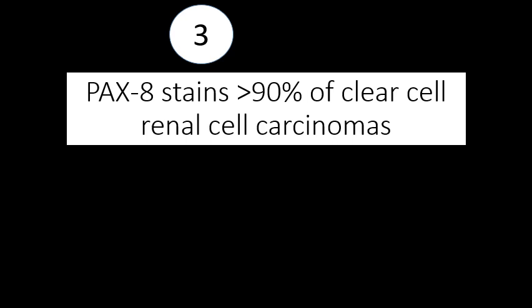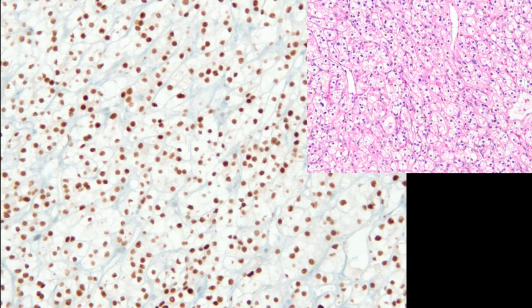PAX-8 stains greater than 90% of clear cell renal cell carcinomas. It also stains other kinds of renal cell carcinomas like papillary and chromophobe, but clear cell renal cell carcinoma is the prototype and the vast majority of cases are positive. Here is an example: at the top right you see a clear cell renal cell carcinoma, and at the bottom you see strong and diffuse PAX-8 staining in the nuclei of the tumor cells.